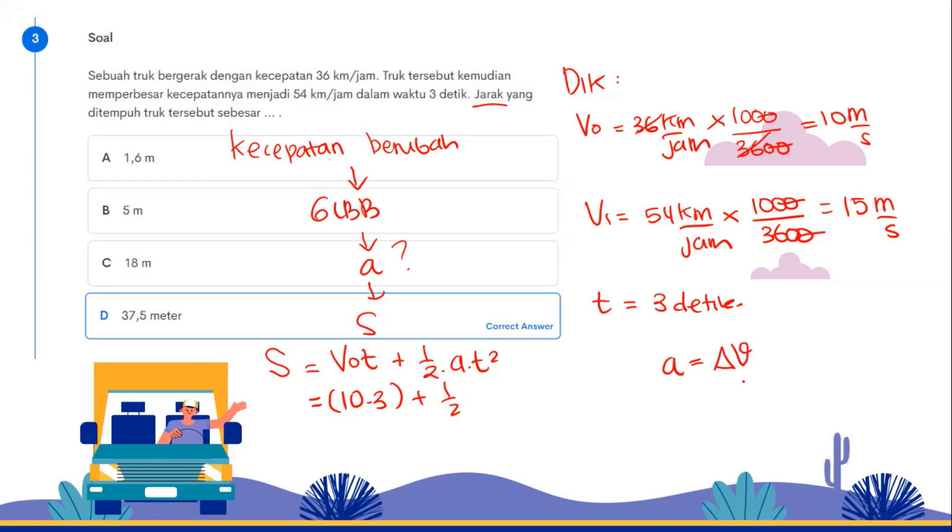A's formula is delta V divided by time. Delta V is the change in velocity. Originally 36 becoming 54, how much is the change? But it must be in meters per second. So 15 minus 10 divided by 3, which is 5/3. 5/3 times, time squared is 9, right? 3 squared is 9. So 30 plus half times 5/3 times 9. Solve this first in parentheses: 9 divided by 3 is 3, times 5 is 15. 15 divided by 2 is 7.5. So the result is 30 plus 7.5, which is 37.5 meters.